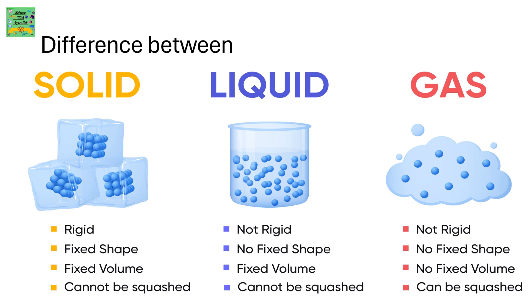Let's learn the differences between solid, liquid and gas. Solid — for example, an ice cube — is rigid. It has a fixed shape, that of a cube, a fixed volume, and it cannot be squashed.